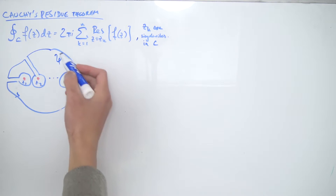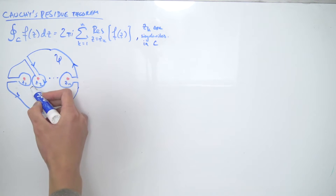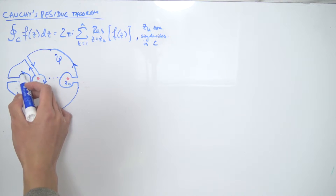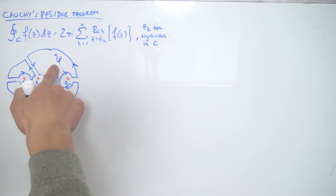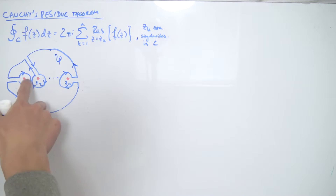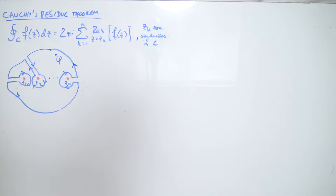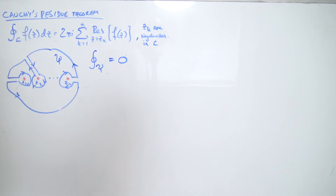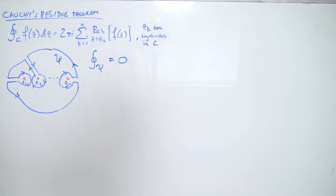If we imagine ourselves walking along this path Psi, we go around the outer loop, and inside each of these little loops we traverse them in the negative direction — clockwise. The nice thing about Psi is that everywhere inside its domain it's actually completely analytic, because all these poles are in fact outside of the region enclosed by Psi. So by Cauchy's integral theorem, the contour integral over Psi is just zero.